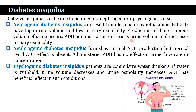Neurogenic diabetes insipidus results from lesions in the hypothalamus, and patients have high urine volume and low urinary osmolality. Production of dilute, copious volume of urine occurs. Antidiuretic hormone administration decreases urine volume and increases urinary osmolality.